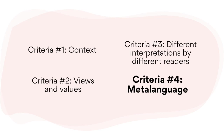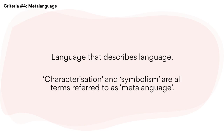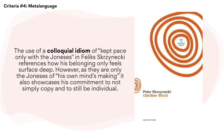Criteria four: meta-language. Meta-language, also known as literary devices, linguistic features, or language elements, is language that describes language. When you're writing an essay, your description of the way an author constructs a text through words such as characterization and symbolism are all terms referred to as meta-language. So ask yourself: how does the author use language to portray a certain character or idea in a particular way? Here's an example from Peter Skrzynecki's poems: the use of the colloquial idiom 'kept pace only with the Joneses' in Felix Skrzynecki references how his belonging only feels surface deep. However, as they are only the Joneses of his own mind's making, it also showcases his commitment to not simply copy and to still be individual. I've done a more detailed video diving into meta-language, so I'd recommend you have a watch of that too.